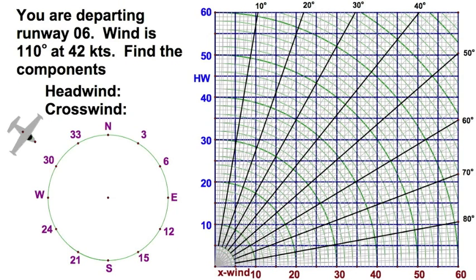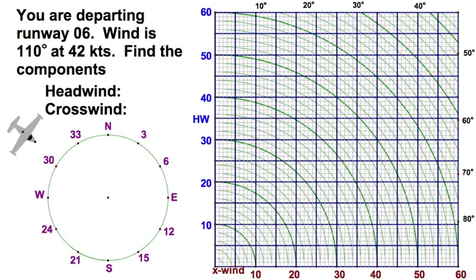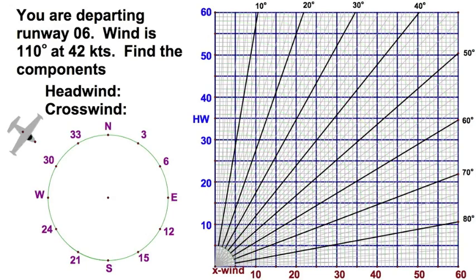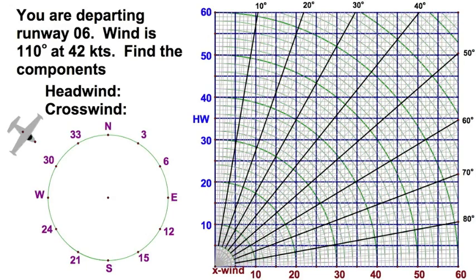Now, here's a practical application for that crosswind component chart that you've been using. A reminder here, I've got crosswind in brown on the horizontal axis, and in the vertical axis, I've got the headwind in blue. And if you haven't seen this chart before, remember these radial lines represent the angle of the wind, and these arcs represent the total wind.